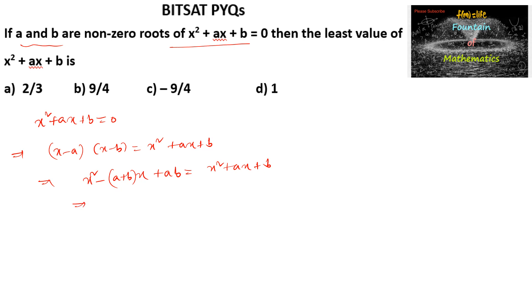Comparing coefficients, we get -(a + b) = a and ab = b. From the first equation, -a - b = a, which implies 2a = -b. From the second equation, ab = b gives us a = 1.